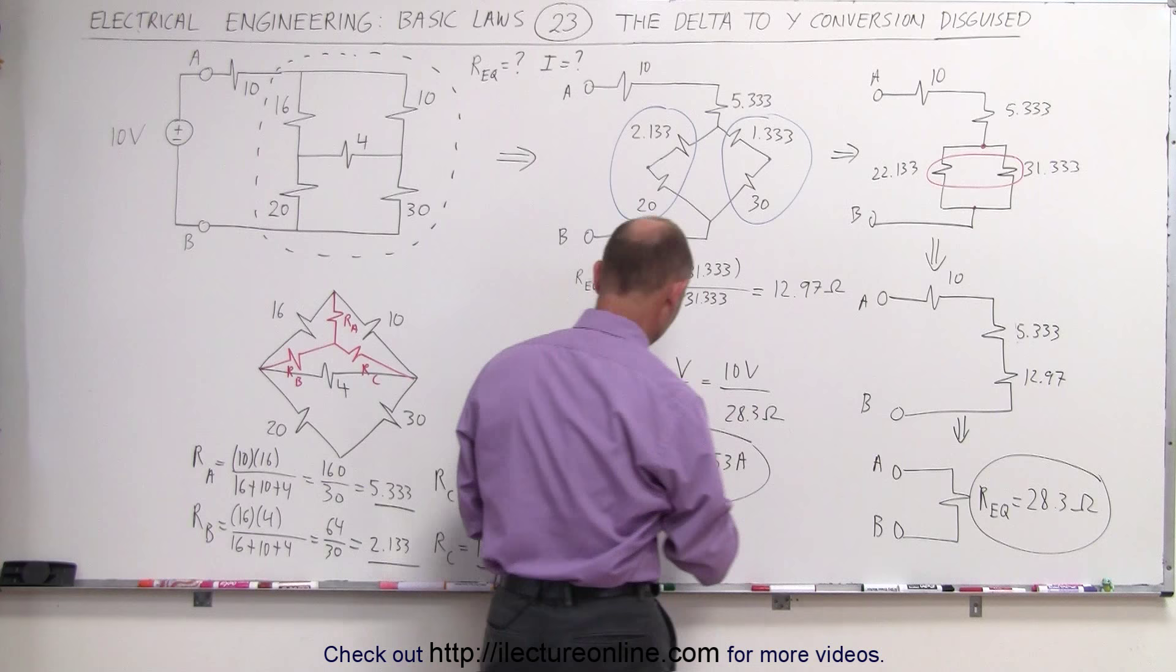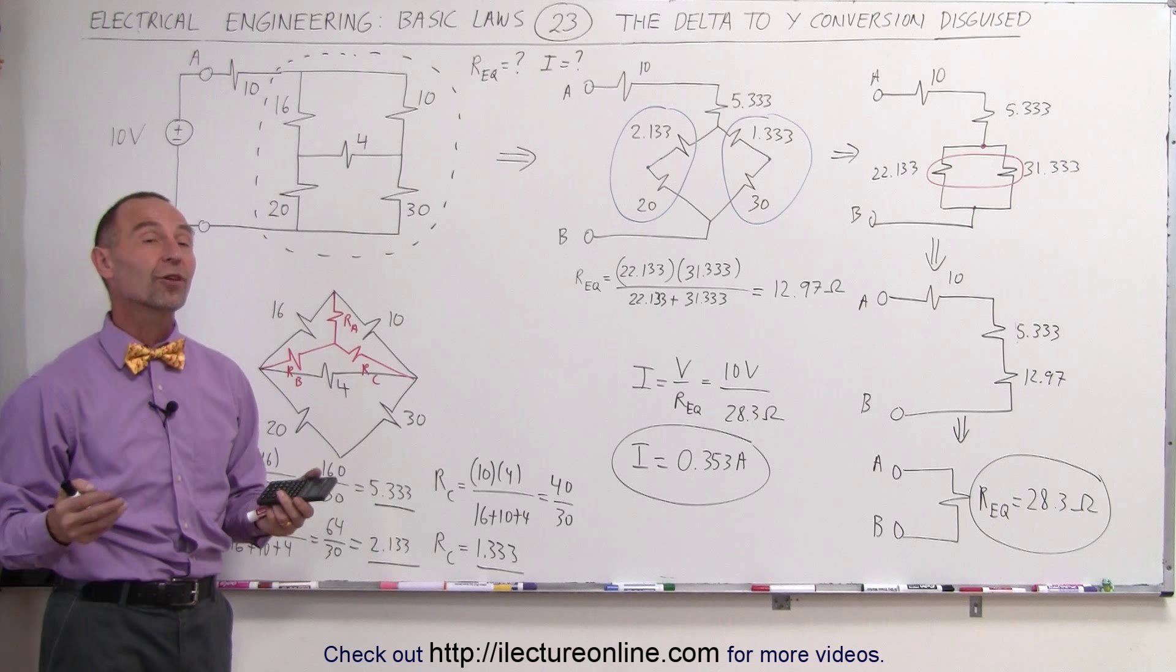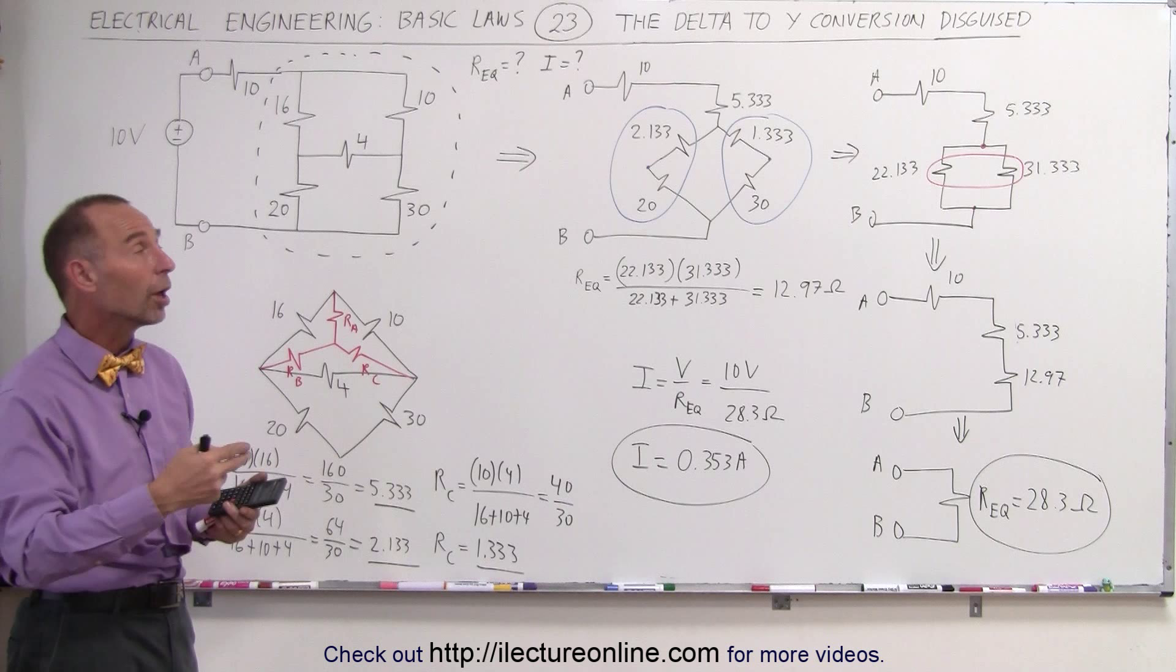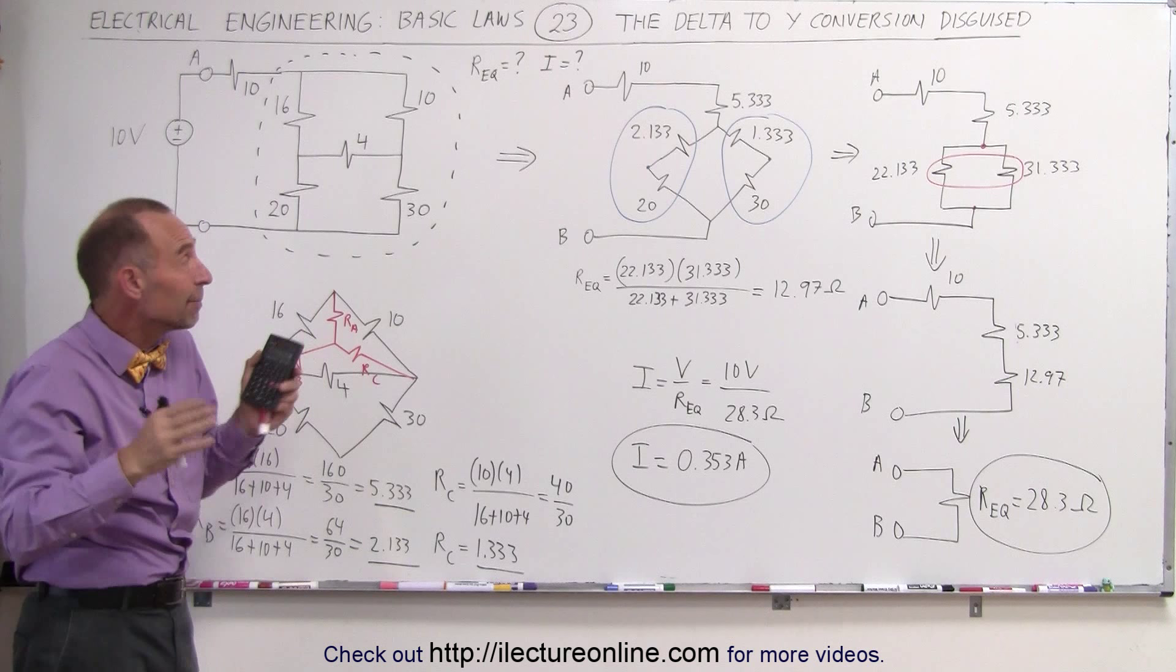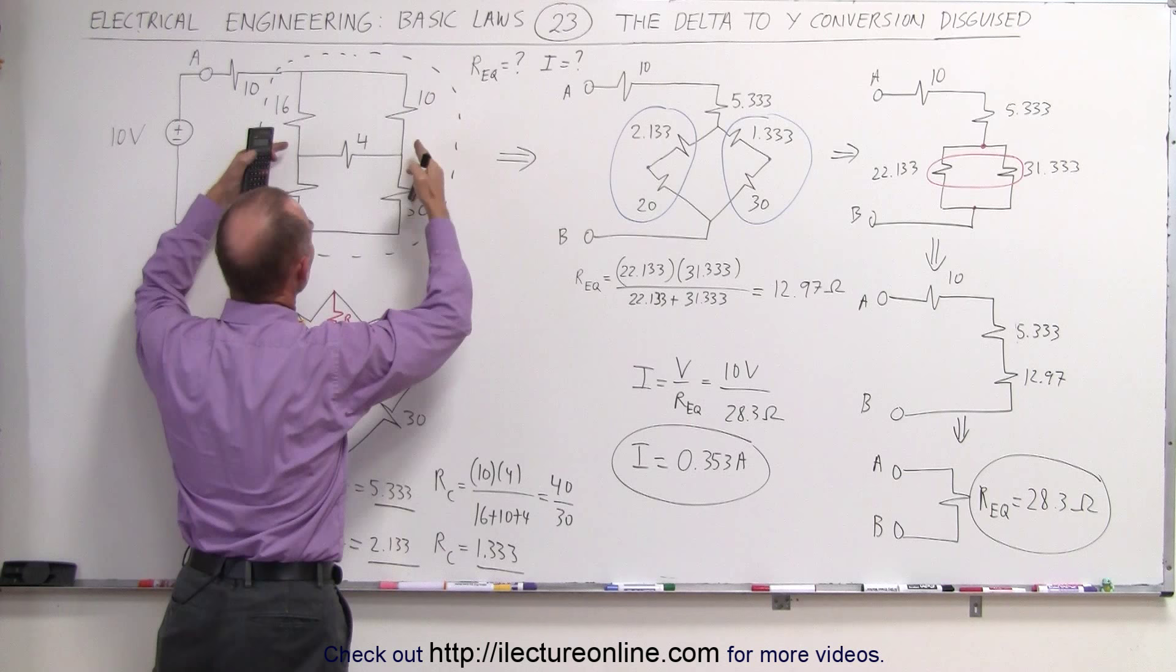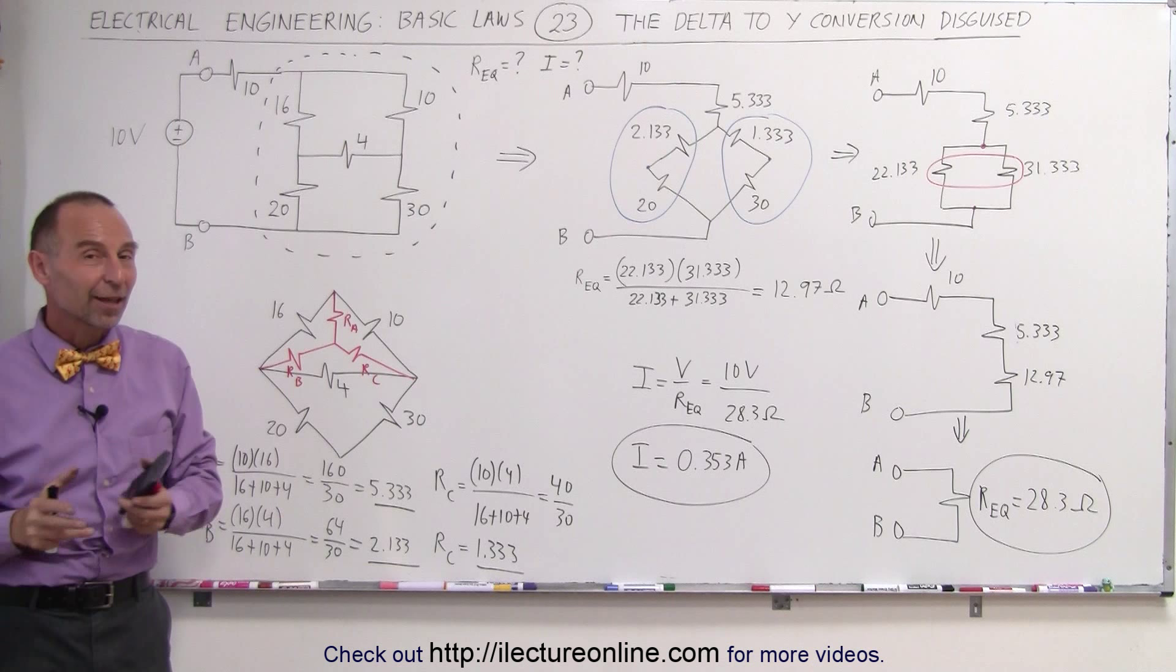And that's how we do that. Without using the delta-to-y conversion, this would be a very difficult problem to solve. We would probably have to use the laws of Kirchhoff. Kirchhoff's two laws come up with a lot of unknowns, a lot of equations, a lot of algebraic work, but this is just a lot easier to do. So here's a real delta-to-y conversion, even though initially it may not look like it, but if you bring these two together into a point, now you see the triangular shape of the delta, you then do the conversion, and then you can easily work out the rest of the problem. That's how we do that.